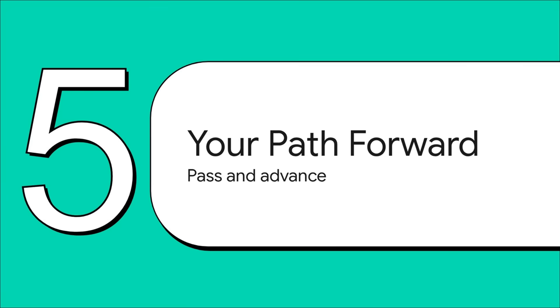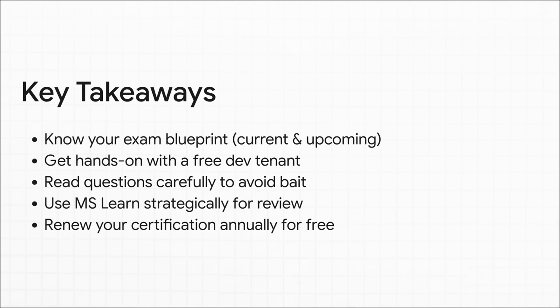We've covered the what, the why, and the how — let's bring it all home and lay out your path forward, from crushing this exam to really taking the next big step in your IT career. Here's the number you need to burn into your brain: 700. The exam is scored on a scale up to a thousand. You don't need a perfect score, you don't need 950 — you just need to clear that 700 hurdle. That's the finish line. Keep that number in your sights. Here's a quick recap of the most important takeaways: first, know your exam blueprint inside and out, especially with those September changes. Second, get that free developer tenant and get your hands dirty — it is absolutely non-negotiable. Third, read the questions like a hawk to avoid the bait. Fourth, use MS Learn, but use it strategically at the end. And bonus tip: once you pass, don't forget you have to renew your certification every year — but the renewal is free and you do it online.